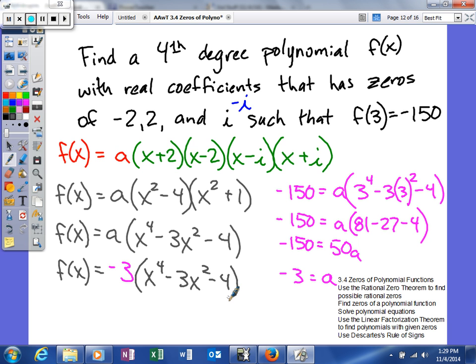And then x to the fourth minus 3x squared minus 4. And then what we can do is we can go ahead and distribute that, and get what our final answer will be. f(x) is equal to negative 3x to the fourth, and then plus 9x squared, and then plus 12.